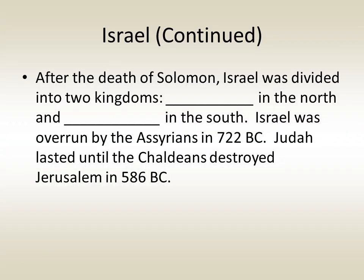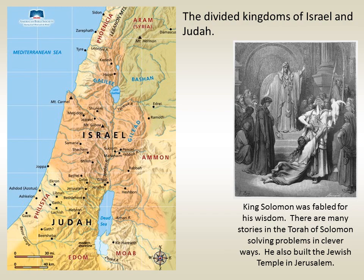After the death of King Solomon, Israel was divided into two kingdoms — Israel to the north and Judah to the south. Israel was overrun by the Assyrians in 722 BC, and Judah lasted until the Chaldeans destroyed Jerusalem in 586 BC. Solomon was fabled for his wisdom; one well-known example was when two women disputed rights to a baby — Solomon ordered the baby cut in half, at which point the real mother agreed to give the child up rather than see it hurt, and Solomon awarded her the baby, recognizing her as the true mother.